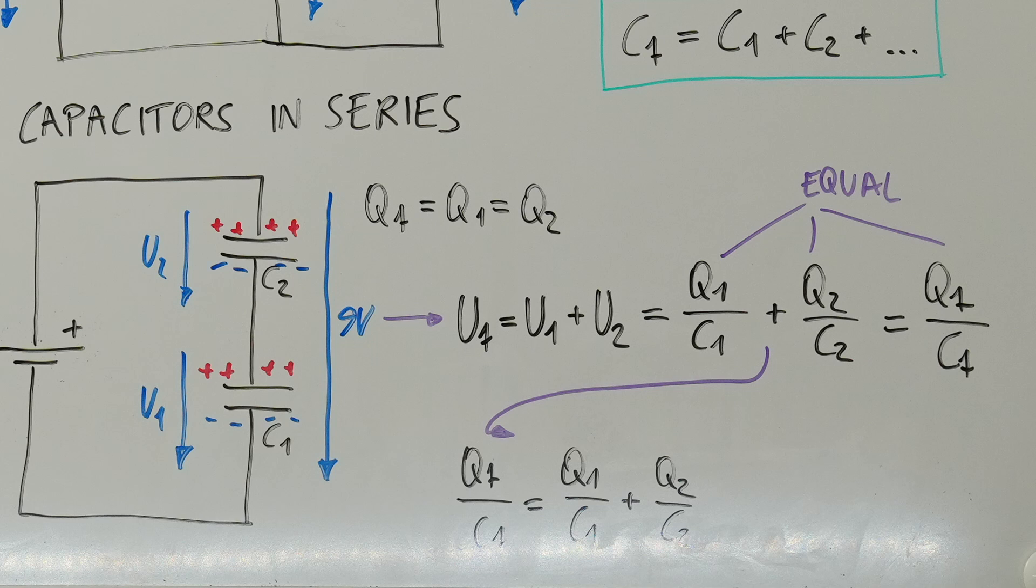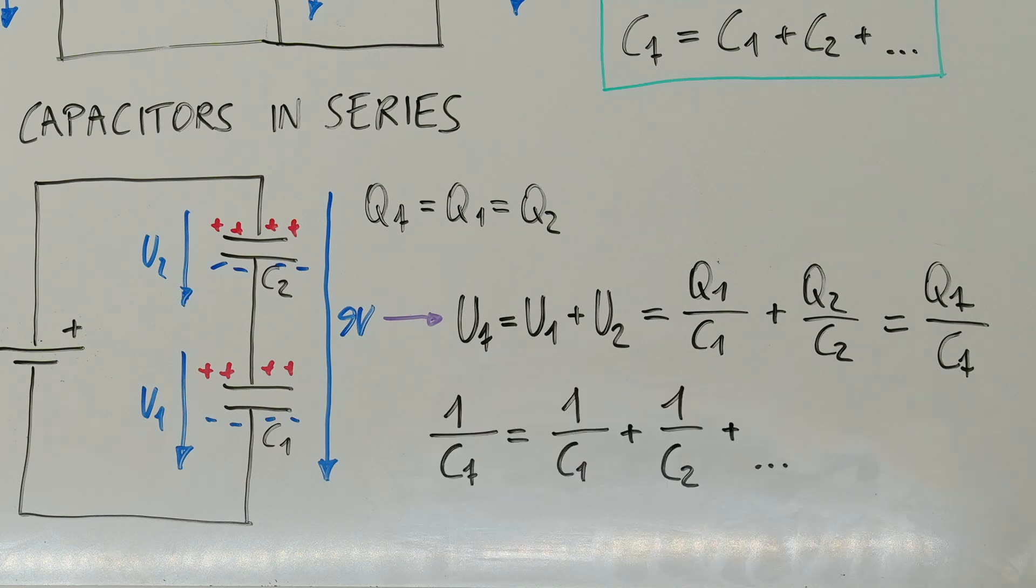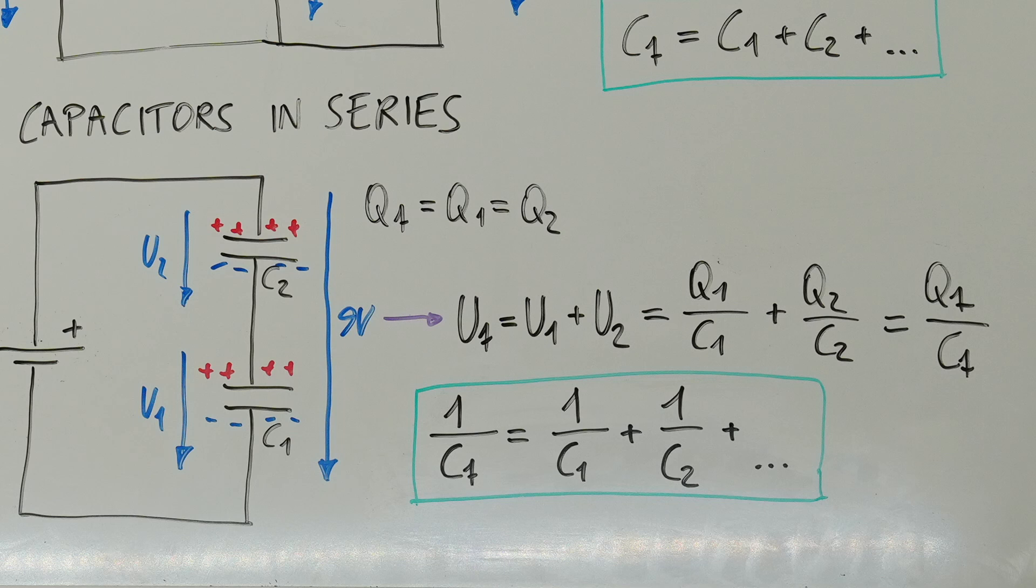As the charge of the equivalent capacitor would be the same as the charge of any one of the single capacitors, we can cancel the charges and get the formula for capacitors in series. 1 over C total is equal to 1 over C1 plus 1 over C2 dot dot dot. Adding capacitors in series reduces the overall capacitance, similar to how resistors' resistance reduces in parallel circuits.